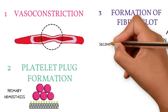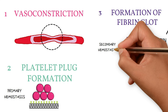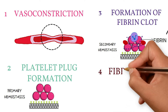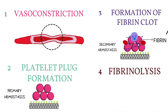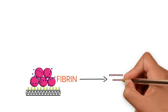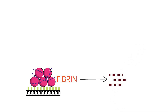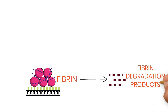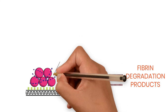The formation of a fibrin clot is secondary hemostasis. This fibrin clot also traps white blood cells and red blood cells. Once bleeding is controlled, the fourth step is fibrinolysis — the dissolution of the clot — where fibrin strands are degraded into fibrin degradation products. This is carried out by a substance called plasmin.